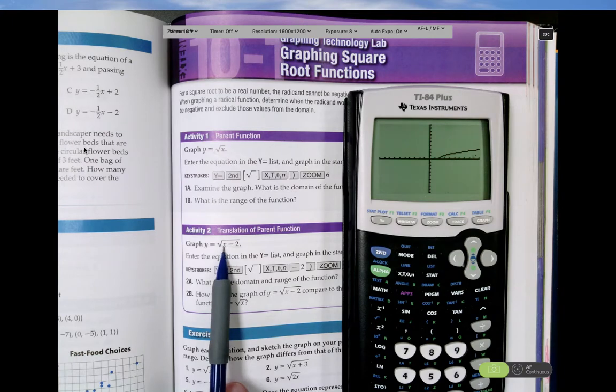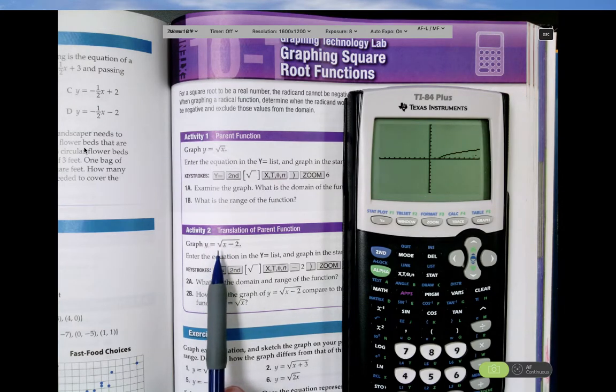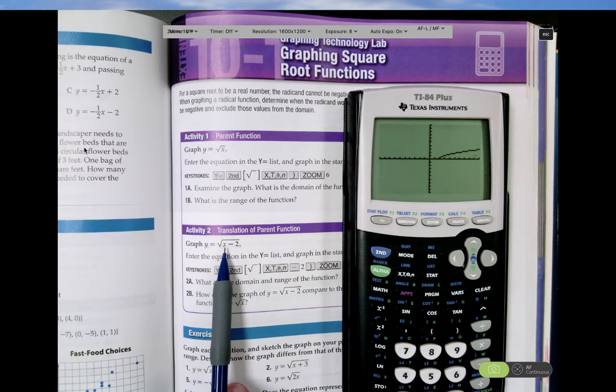If I put in 3 for x, 3 minus 2 is 1. The square root of 1 is 1. So when x equals 3, y equals 1. So that works also. So the domain is x equal to 2 or greater than 2. So we would write that as x is greater than or equal to 2.